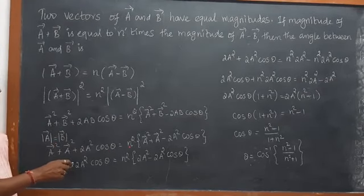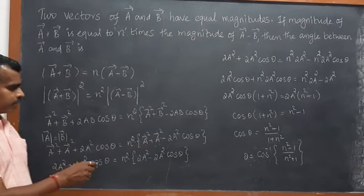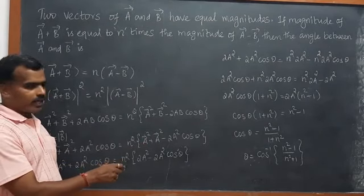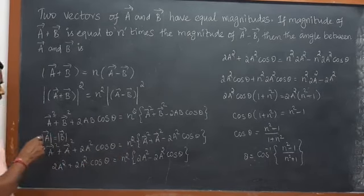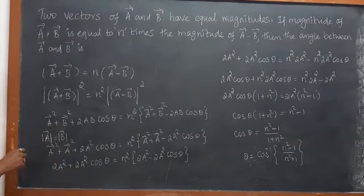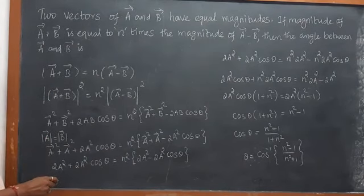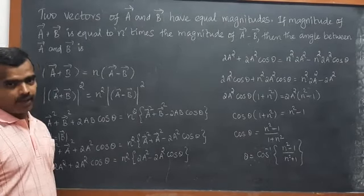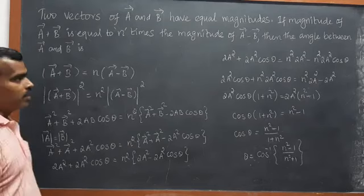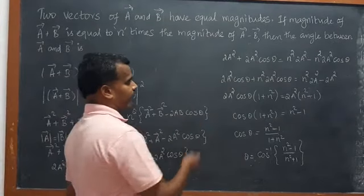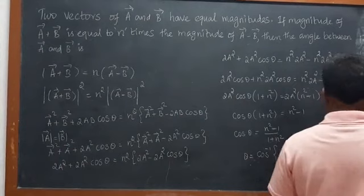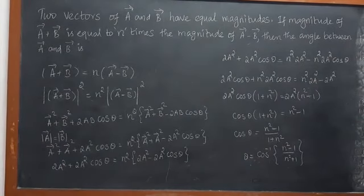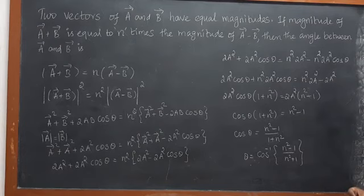So we have 2A squared cosθ on the left side, and on the right side n squared times A squared plus A squared minus 2A squared cosθ. All B terms are converted into A due to the given data. Simplifying: A squared plus A squared plus 2A squared cosθ equals n squared times 2A squared minus 2A squared cosθ.